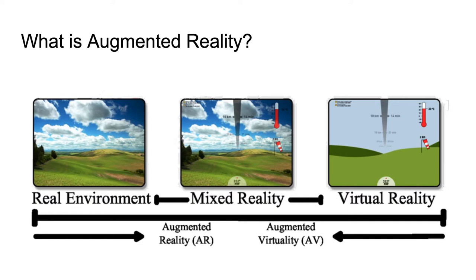Where augmented reality ends and augmented virtuality starts is subject to interpretation — we usually judge it by the amount of real-world content presented to the viewer. Augmented reality is basically a sub-concept of mixed reality, often abbreviated to XR, which combines the real world with artificial content.